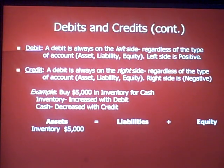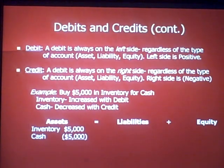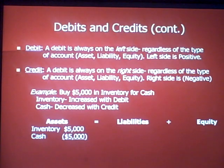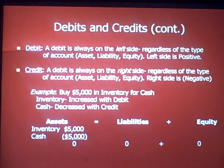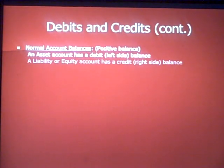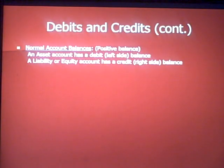Here's an example: you buy five thousand dollars of inventory in cash. Inventory increases with a debit; cash decreases with a credit. It is possible to have both entries on one side of the equal sign, but one is positive and the other — the credit — is negative, and they net out to zero. Looking at the bottom of the page, all zeros: the formula balances.